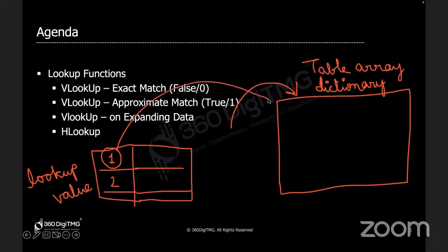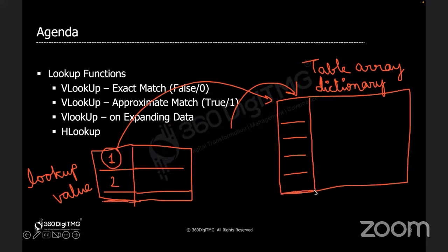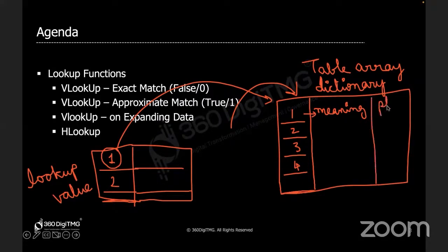Obviously, the word should be present in the dictionary. If there is a column which contains a list of words, I will search in that column. There has to be a common field in both tables — what I am searching for should be present in the place where I am searching for it. There will be a column where all the words are present. What else will we have in the dictionary? The meaning of the word — let's say there is one column holding the meaning of the word, and one more column that has the phonetic representation.